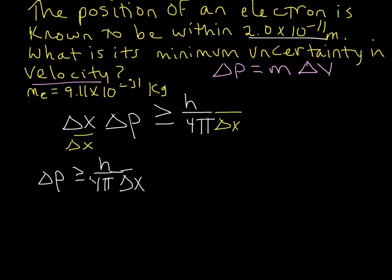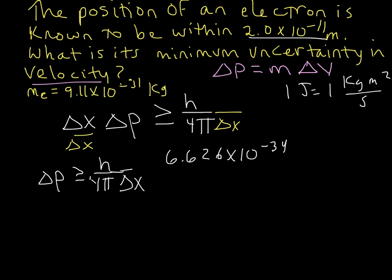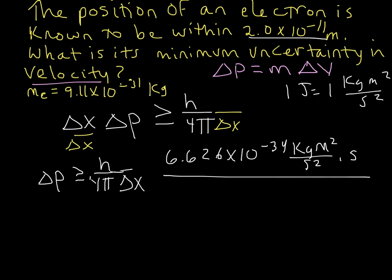Let's fill everything in. We have 6.626 times 10 to the negative 34 — and this is joule seconds. Remember that 1 joule equals 1 kilogram meter squared per second squared, so substituting that in gives us kilogram meter squared per second squared, multiplied by seconds for the joule-seconds, giving kilogram meter squared per second. Then 4 times π doesn't change, and our uncertainty in X is 2.0 times 10 to the negative 11 meters.